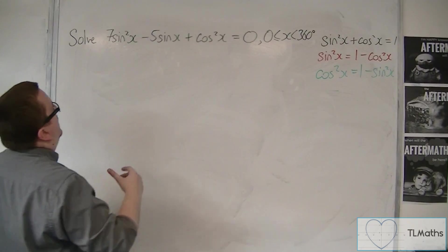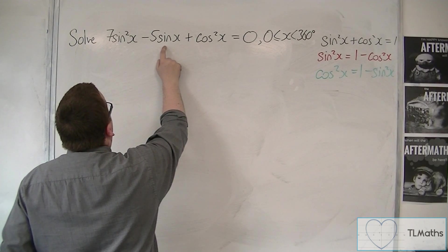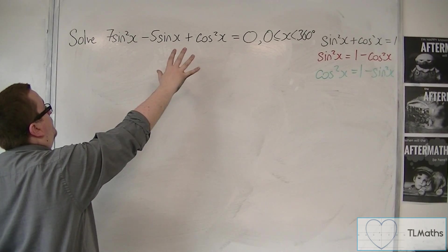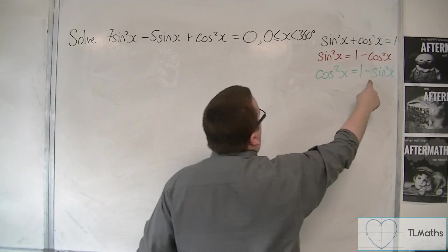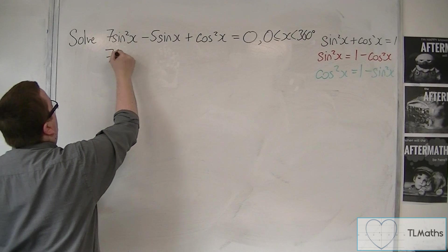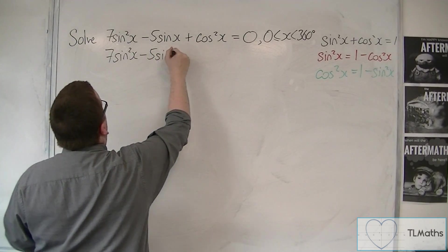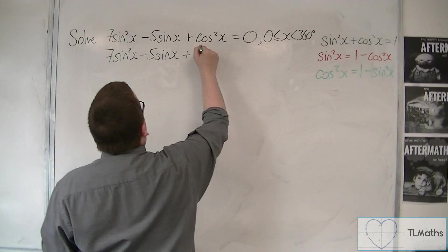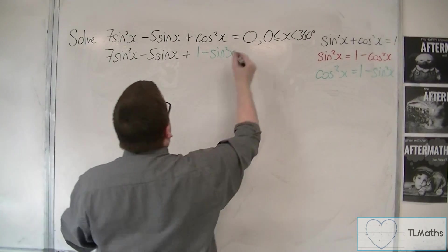Because that single sine x is already there, it makes sense to make everything sine x. So I'm going to replace cos²x with 1 - sin²x. So I get 7sin²x - 5sinx + 1 - sin²x = 0.